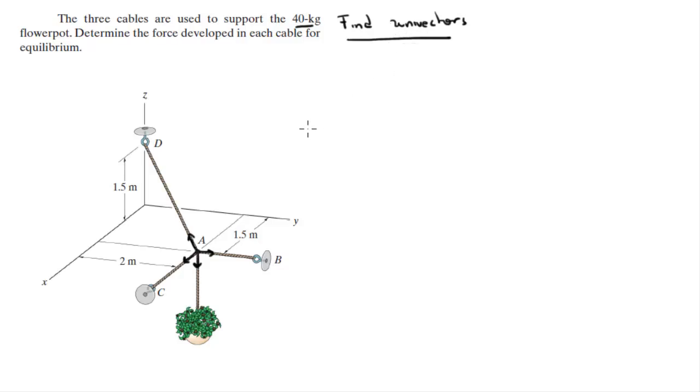So let's find all the unit vectors. Unit vector AB is equal to 0 in the i plus 1 in the j plus 0 in the k. It's very easy to find because it's parallel to the y, therefore it's just 1 in the j.